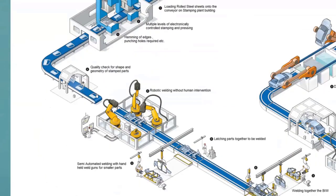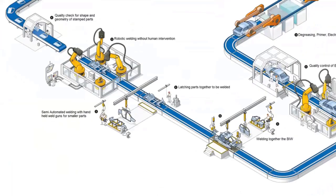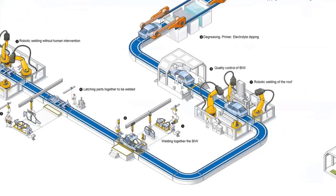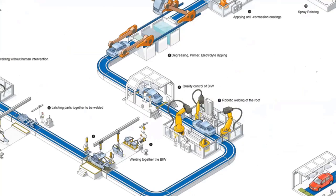From the stamping plant, all the stamped components — doors, hood, etc. — go into a different line called the body in white line. Here they take the stamped parts and perform robotic welding without human intervention. There are huge fixed robots with defined programs. Some complex parts that cannot be reached robotically are welded using semi-automatic welding with handheld weld guns. Once the left and right sides of the car are assembled, it goes to roof placement where robotic welding joins the roof.